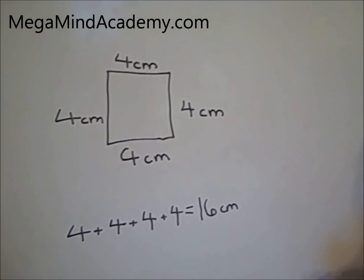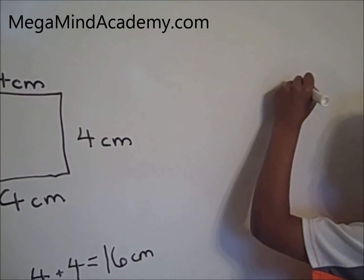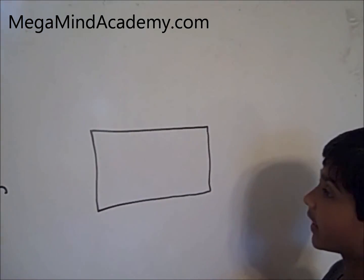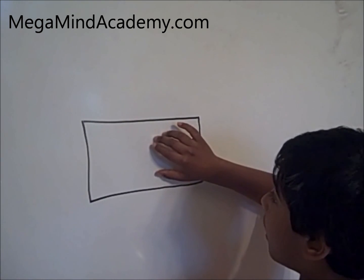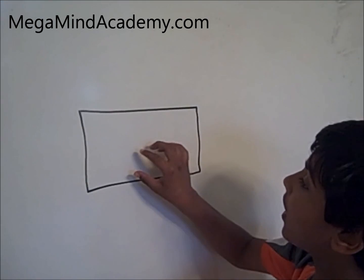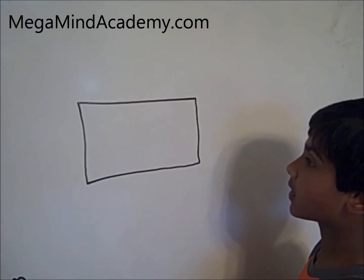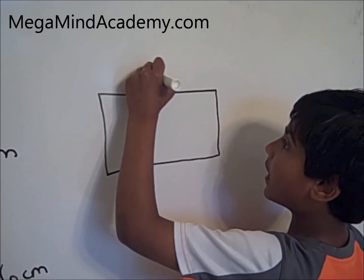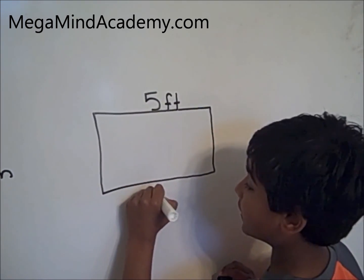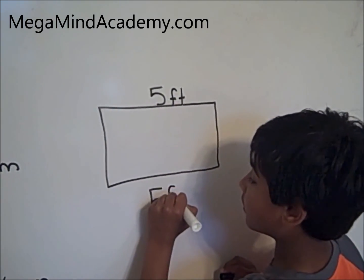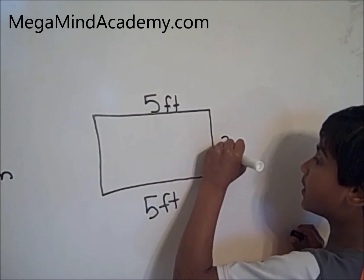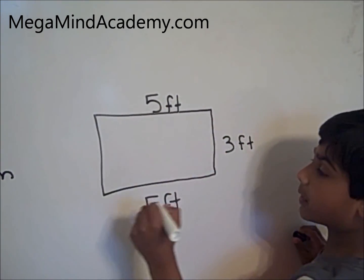Now let's move on to a rectangle. A rectangle has two opposite sides that are the same and the other two opposite sides that are the same. So if this is 5 feet, this will be 5 feet too. And if this is 3 feet, this will be 3 feet too.